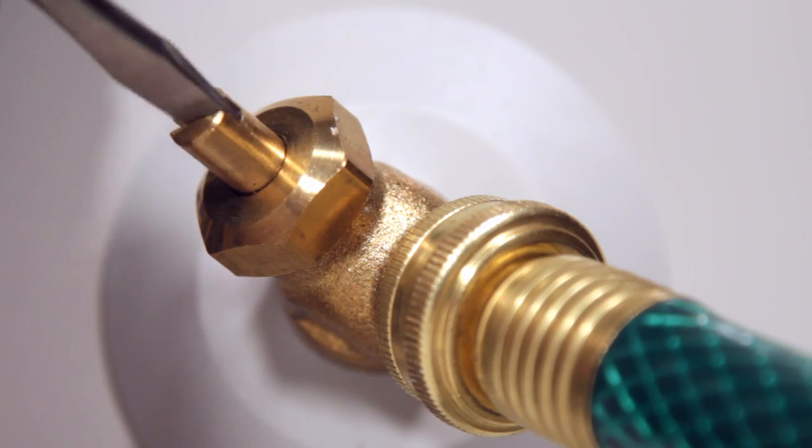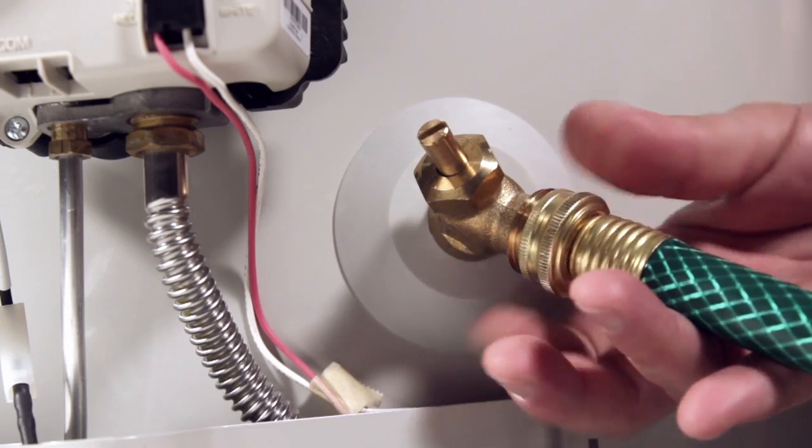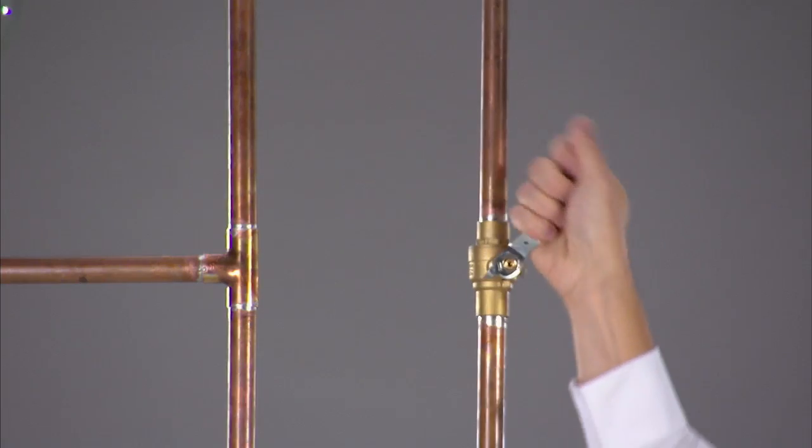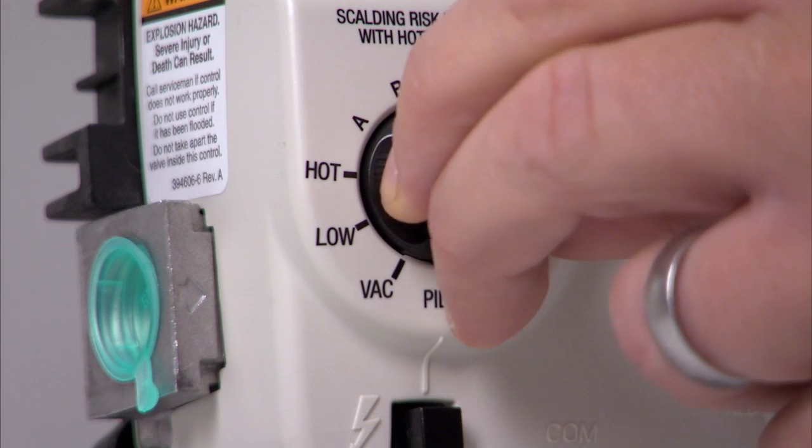When you're all done, close the valve and disconnect the garden hose. Turn off the hot water. Turn your cold water supply back on, and turn your thermostat back to the temperature you want.